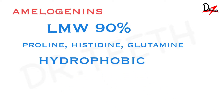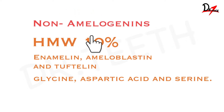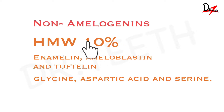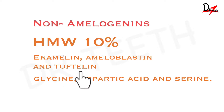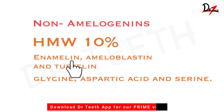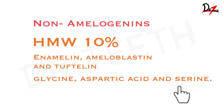Then we have the non-amelogenins. These are high molecular weight proteins and they constitute about 10 percent of the enamel matrix protein. Enamelin, ameloblastin, and tuftelin are the important proteins in this group, and they are rich in glycine, aspartic acid, and serine. So this was about the organic components — amelogenins and non-amelogenins.